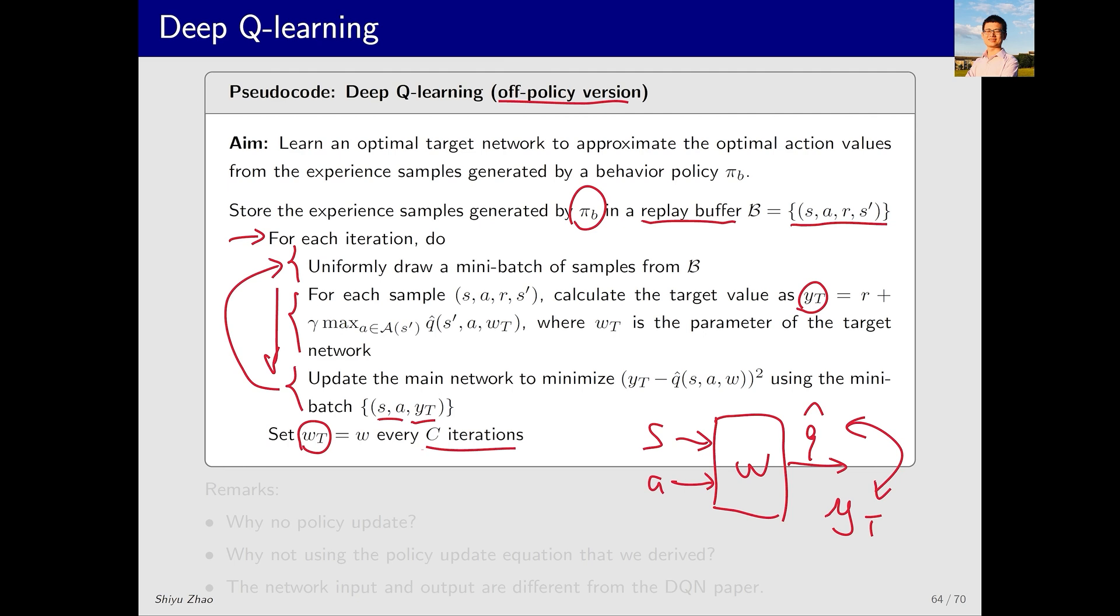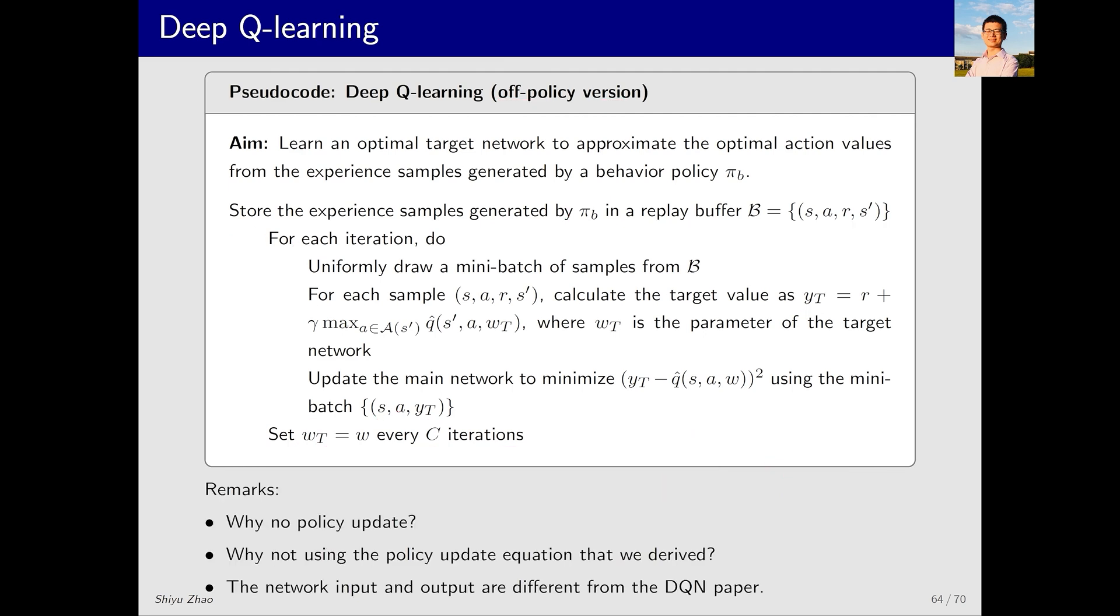Let's clarify a few points. First, why is there no policy update in our pseudocode? Why are we only performing value updates? The reason is simple: it's an off-policy implementation. If this were on-policy, we'd need to add a step for policy updates. However, since we already have the samples, there's no need for this. You can wait until all the q-values have been computed and then perform a policy update to obtain the optimal policy.